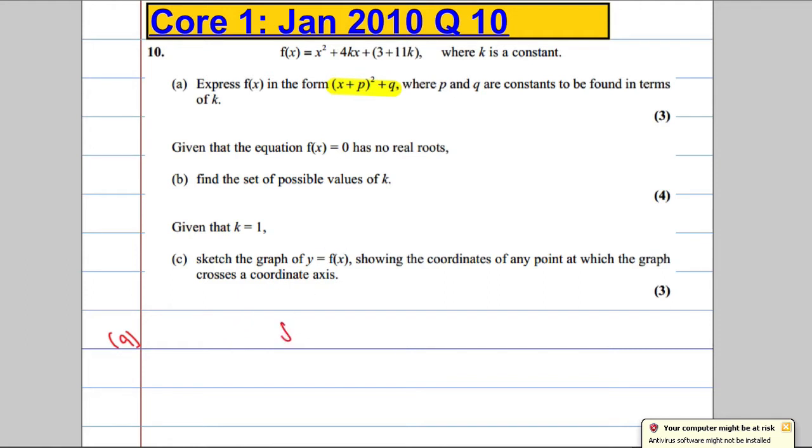Now, before I try and complete the square, I'm just going to write f of x down here, just so it's a little bit easier to work with. x squared plus 4kx plus 3, oh, careful now. I'll sort it out in a second. 3 plus 11k. I'll fix that bracket.